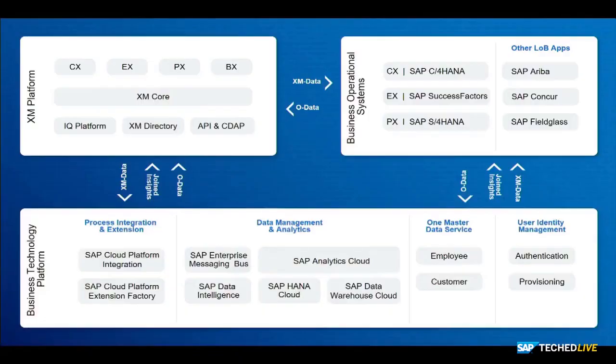We're incredibly excited about the combination of SAP and Qualtrics. One of the things we realized with that combination was the vast amounts of operational data that could be married with the two systems. The integration strategy is quite straightforward: we're going to pull in selected O data from SAP systems to help trigger and run the XM program. Then X data that we derive using those programs will be pushed back into SAP systems for advanced analytics, predictive analytics, and other use cases that might make sense in the SAP ecosystem. We really want a bidirectional flow of data between the two systems, done via open APIs.